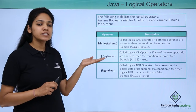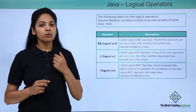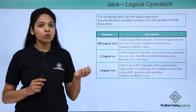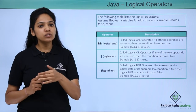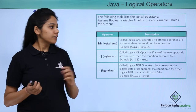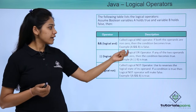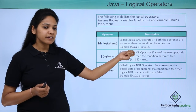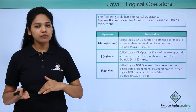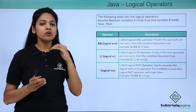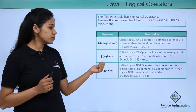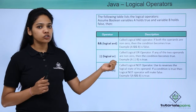The first one is the logical AND operator. It says that if both operands hold a non-zero value, then the result will be true. For example, A is 10 and B is also 10 — what will be the value? You need to provide a condition for each of these operators.